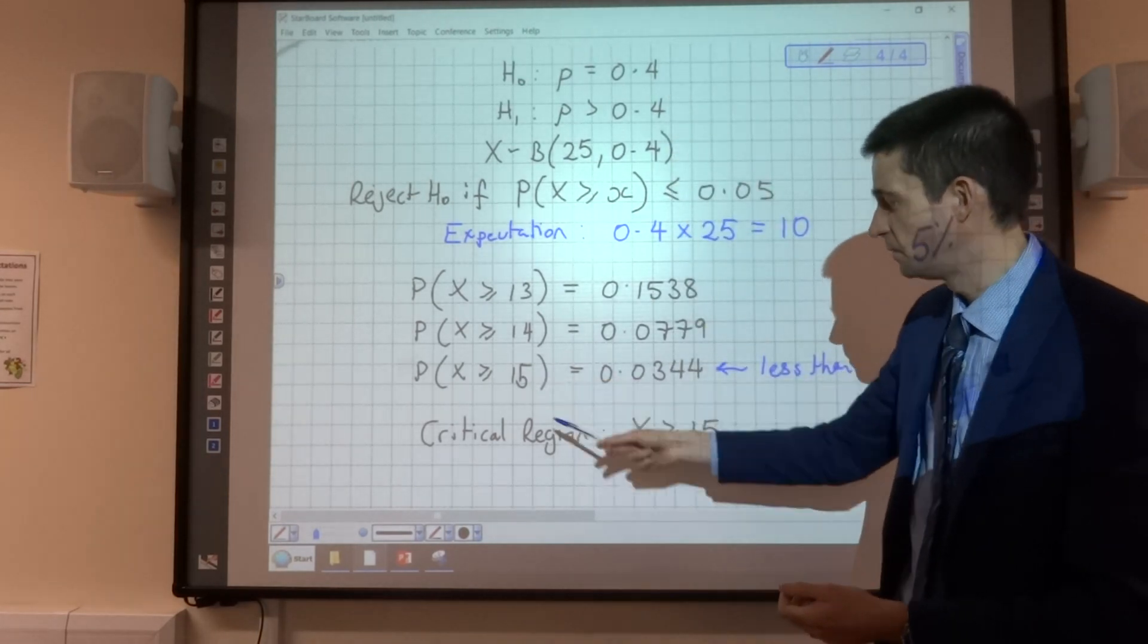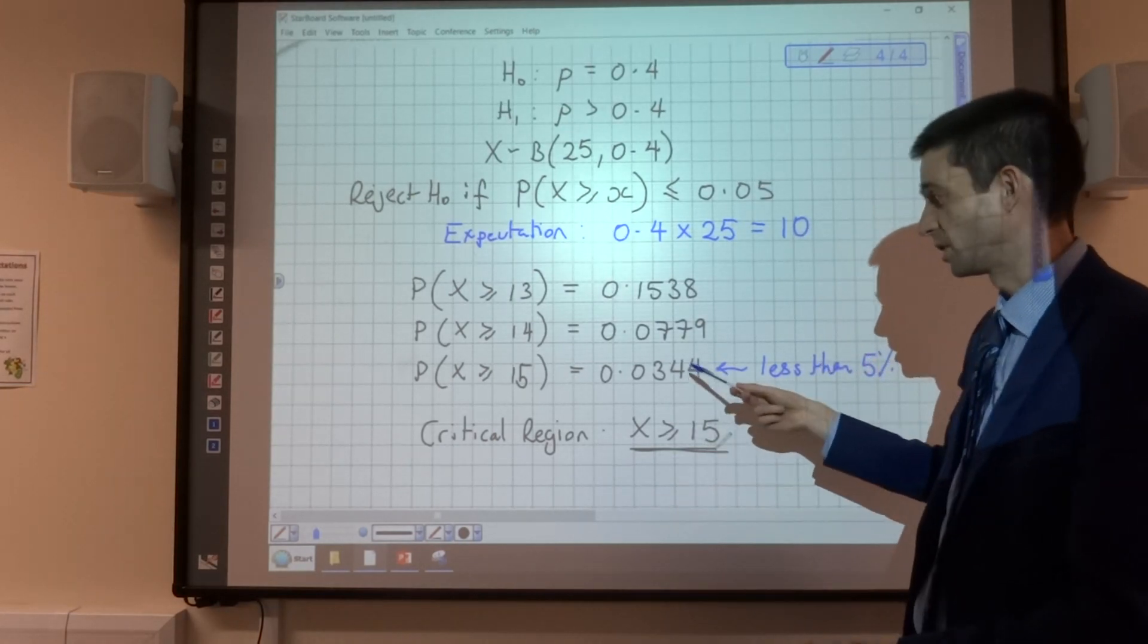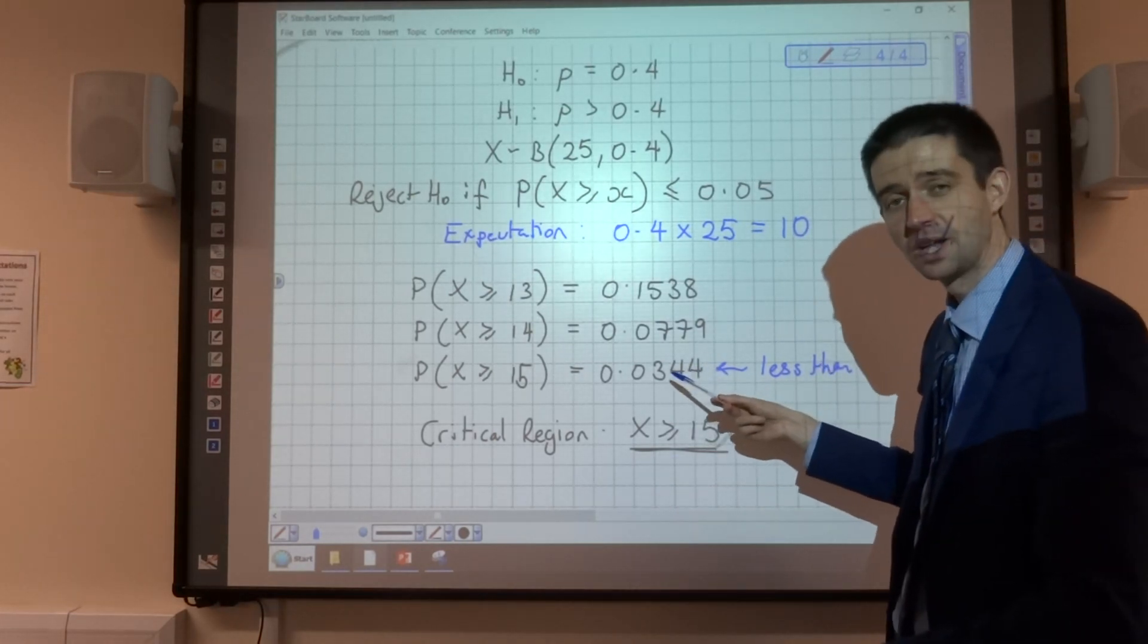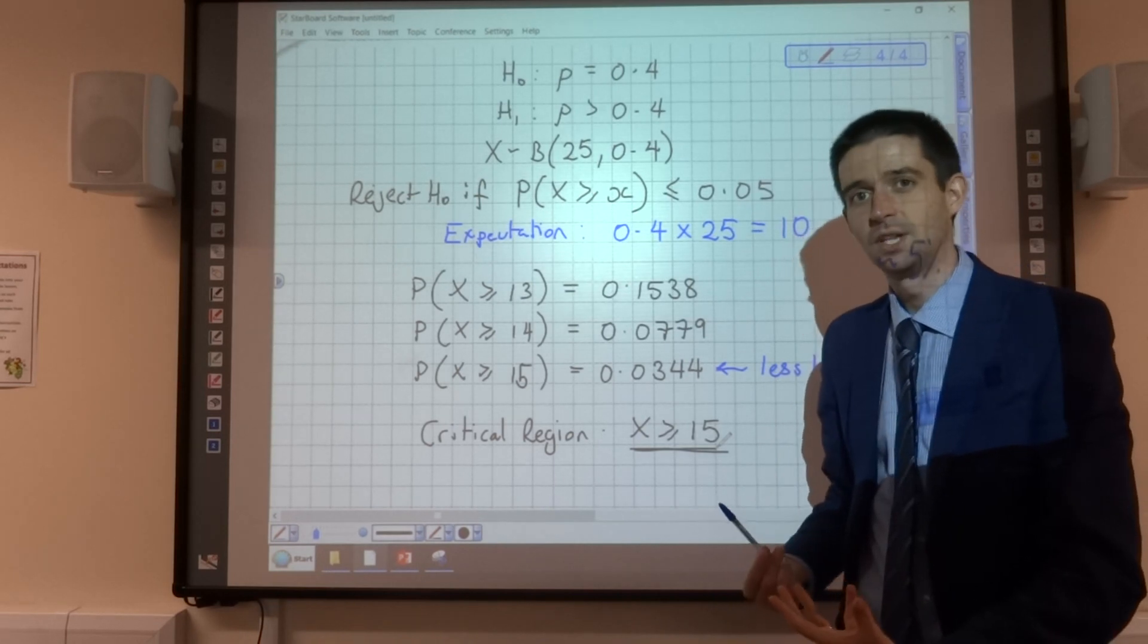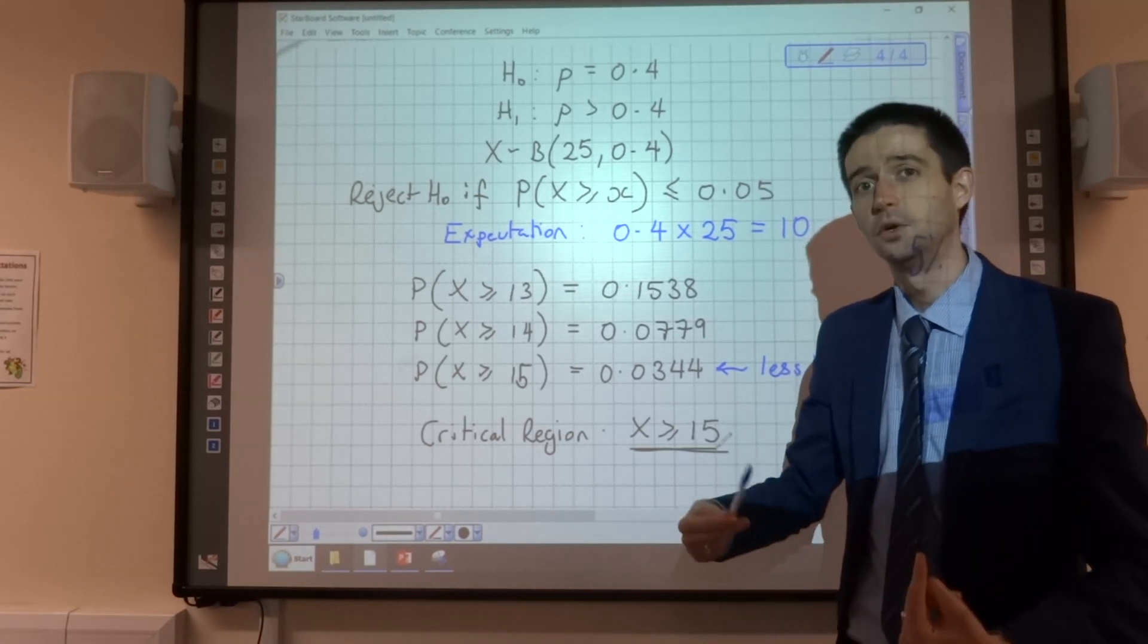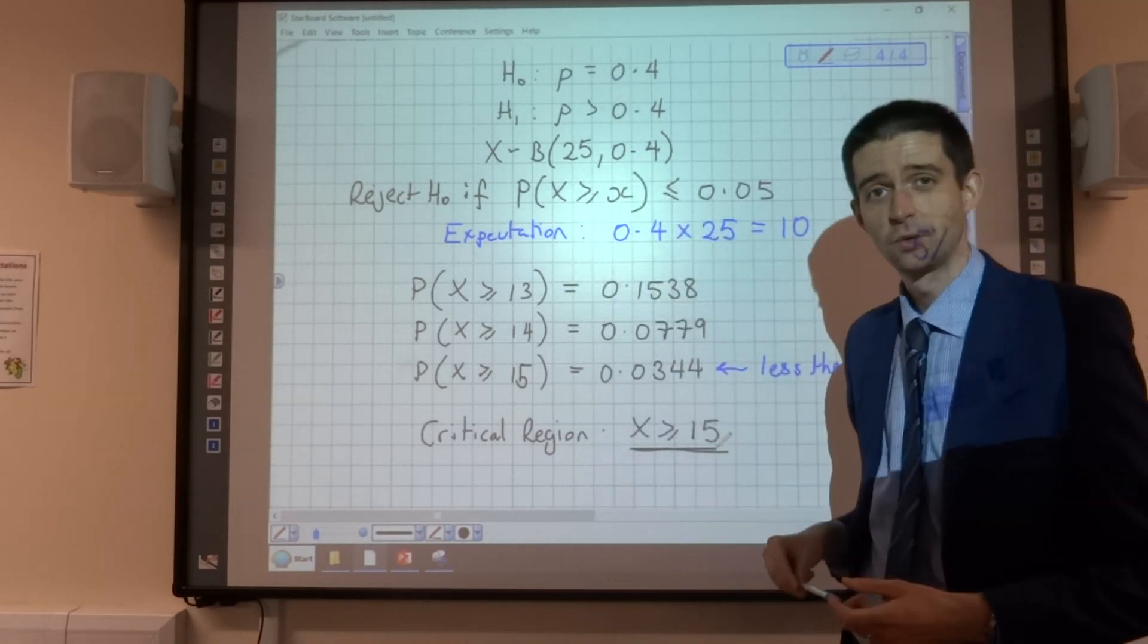And what we've shown here is that if the probability was 0.4, the chance of 15 or more dogs preferring Woof-tastic is only just over 3%, nearly 3.5%, which is less than our significant level, so unlikely enough that we throw into doubt the probability of 0.4.